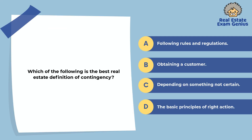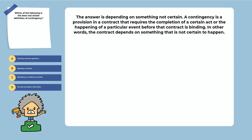Which of the following is the best real estate definition of contingency? Following rules and regulations, obtaining a customer, depending on something not certain, or the basic principles of right action. The answer is depending on something not certain. A contingency is a provision in a contract that requires the completion of a certain act or the happening of a particular event before that contract is binding — the contract depends on something that is not certain to happen.